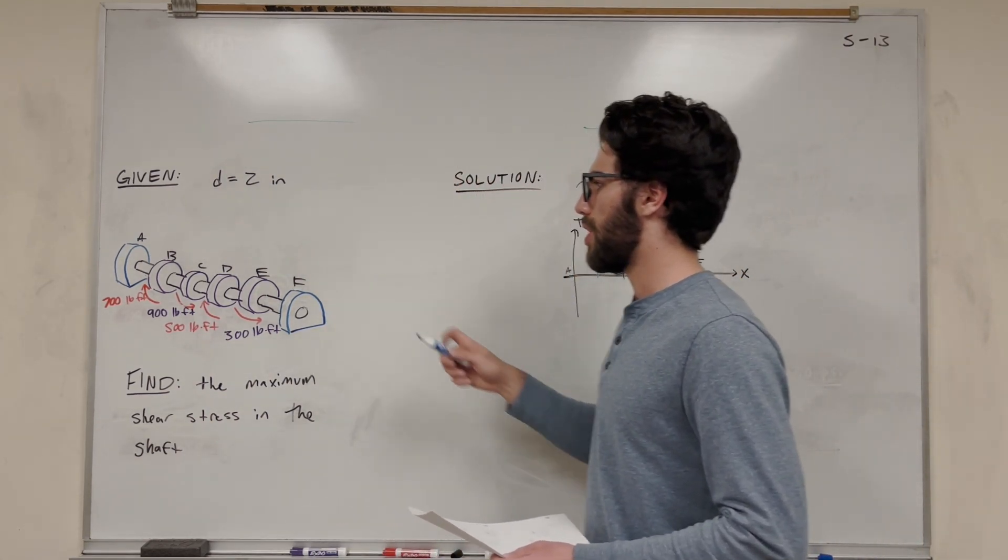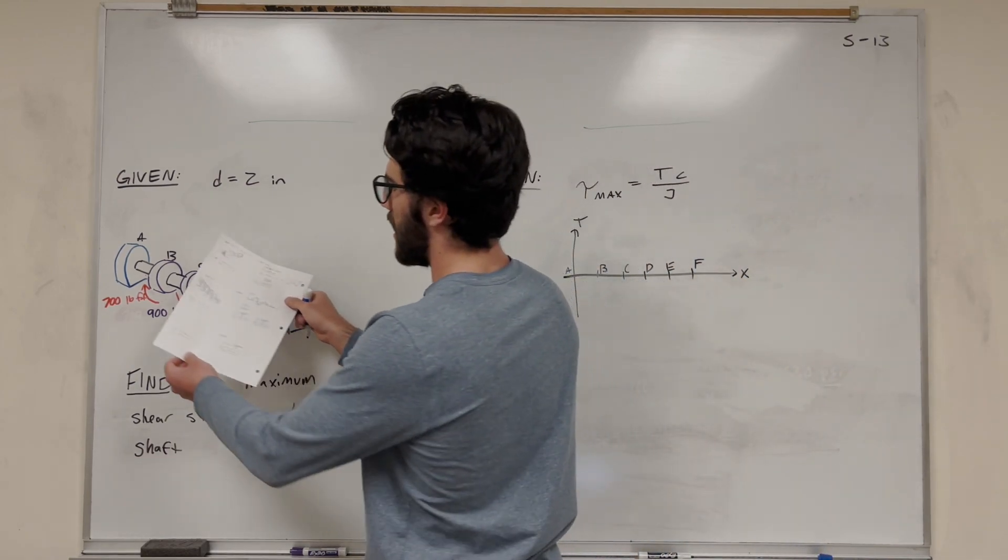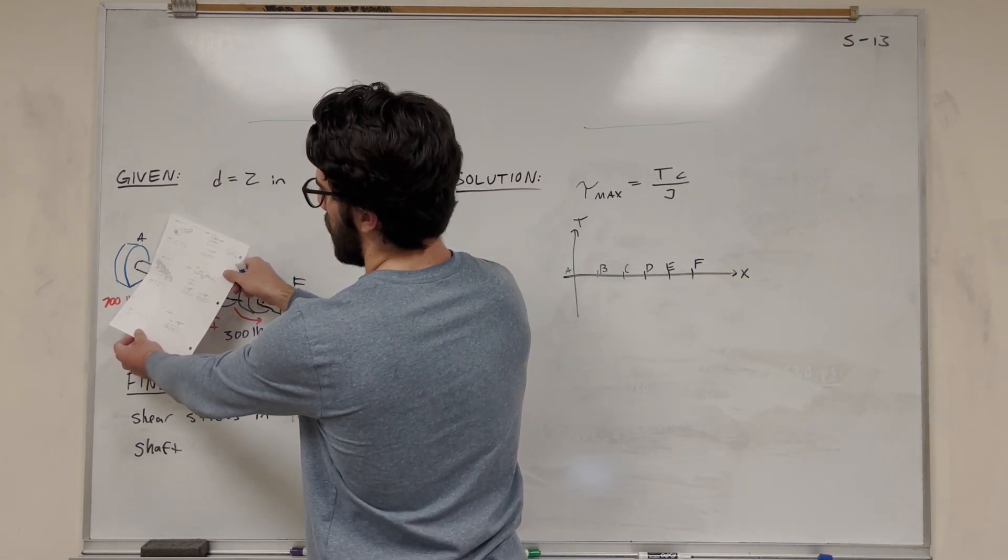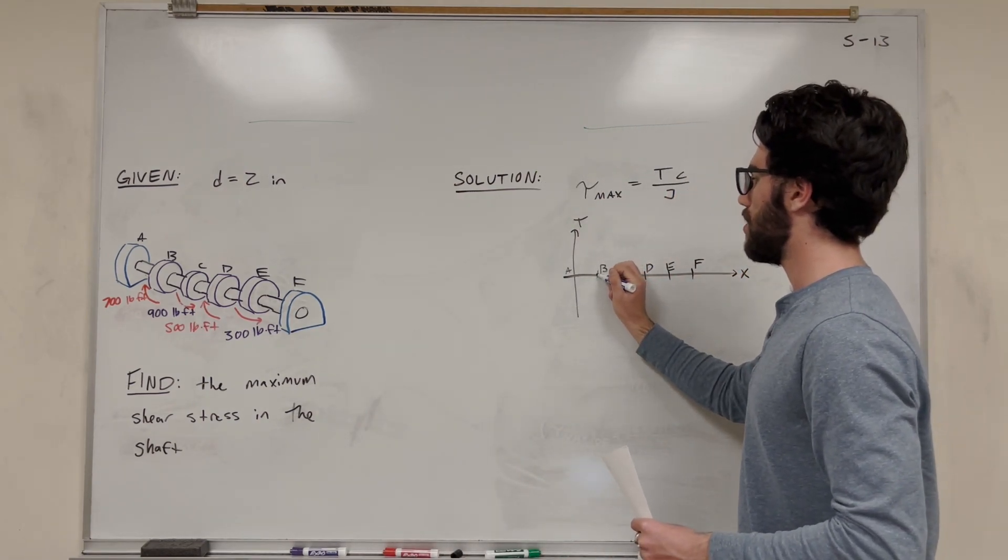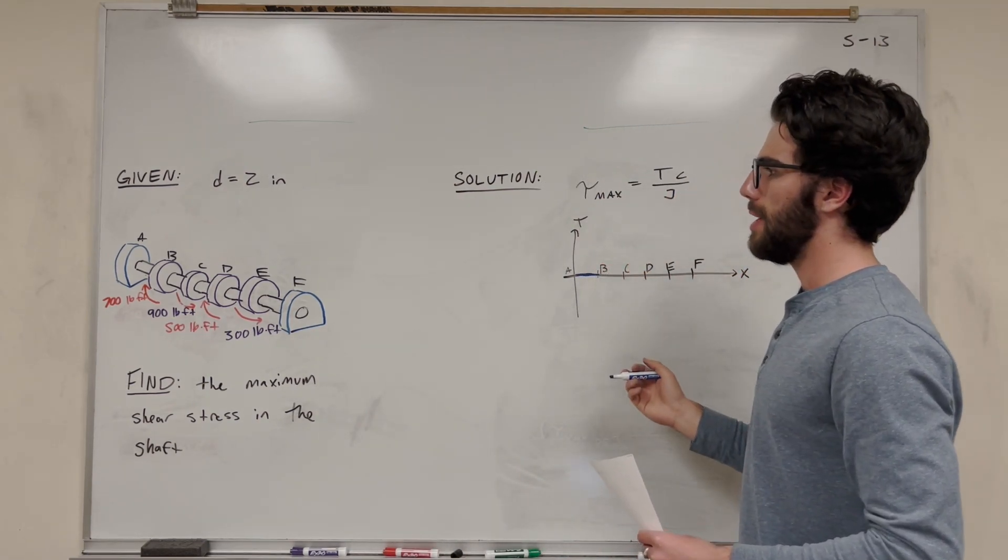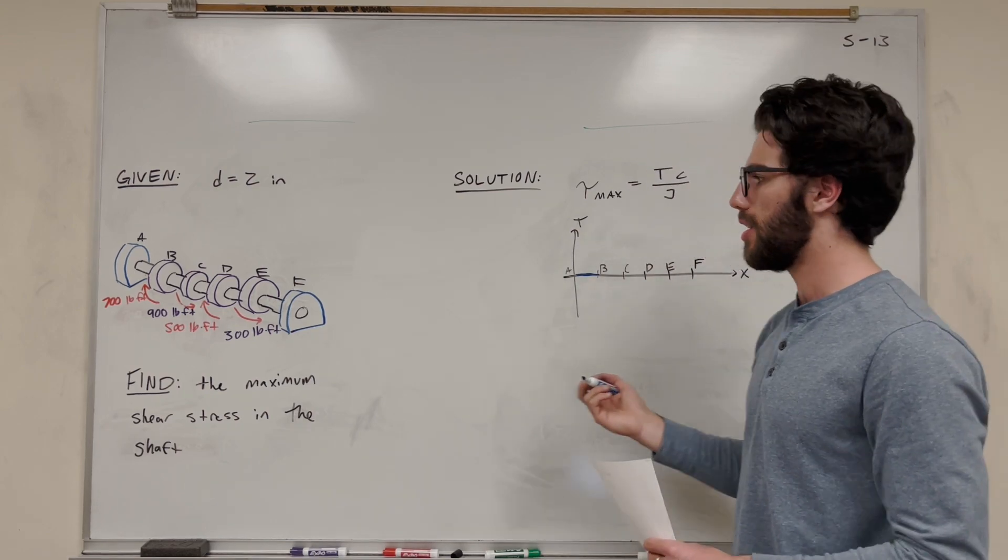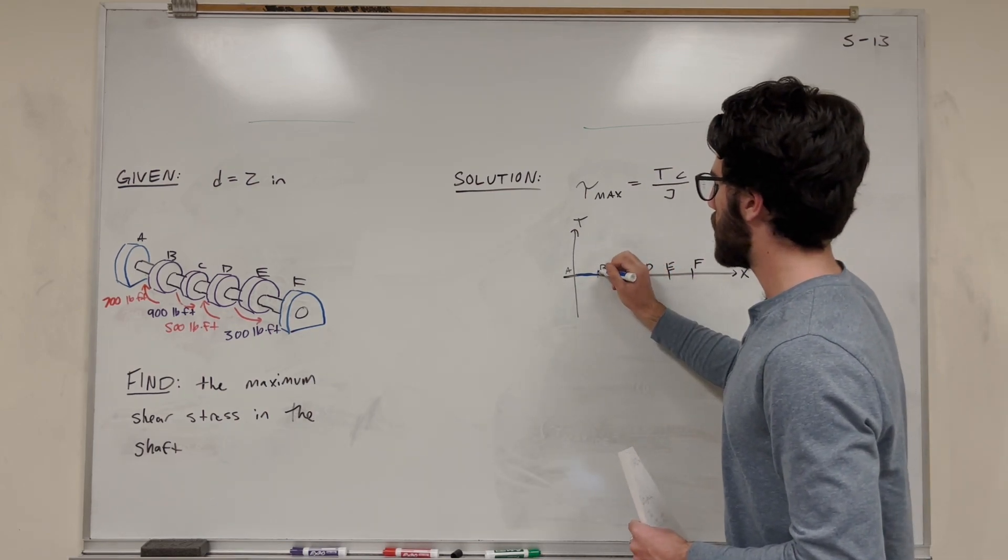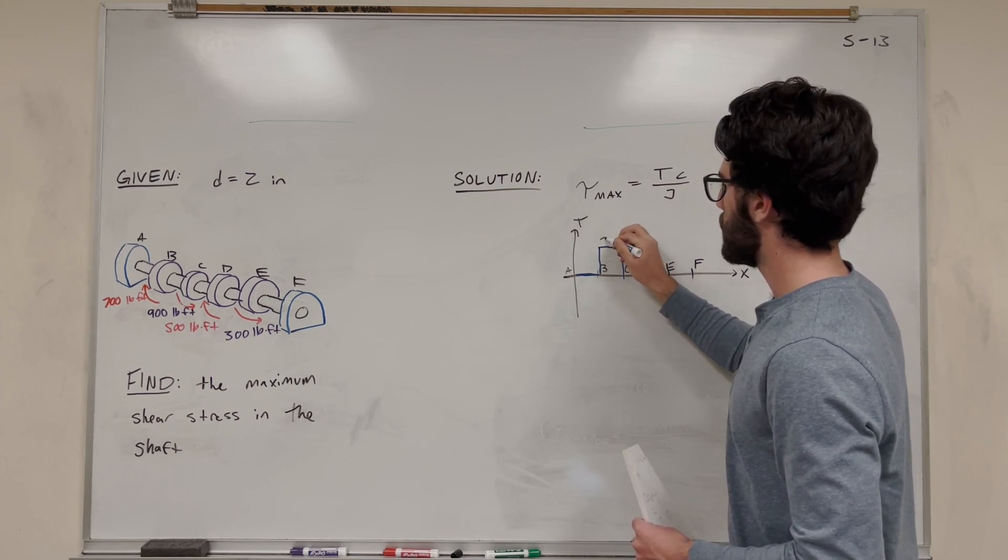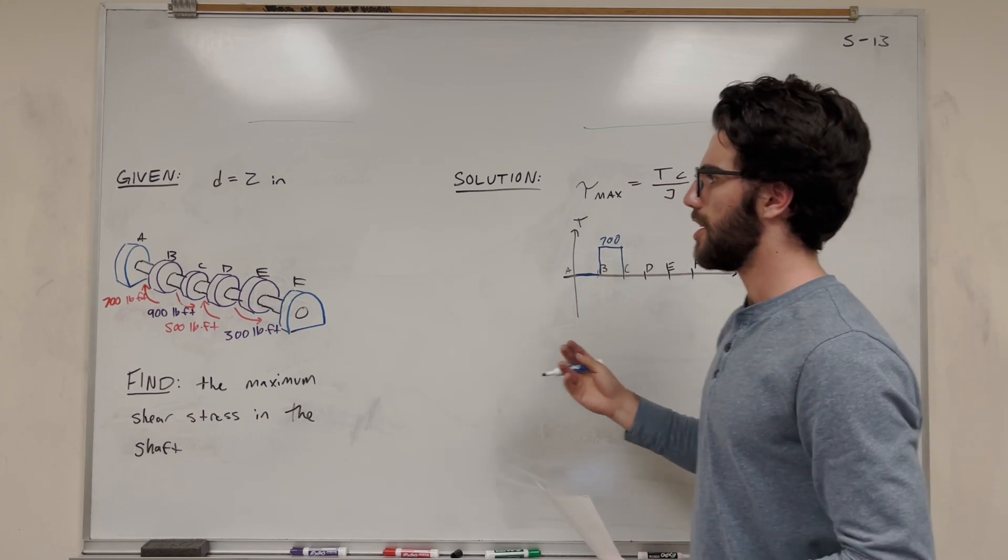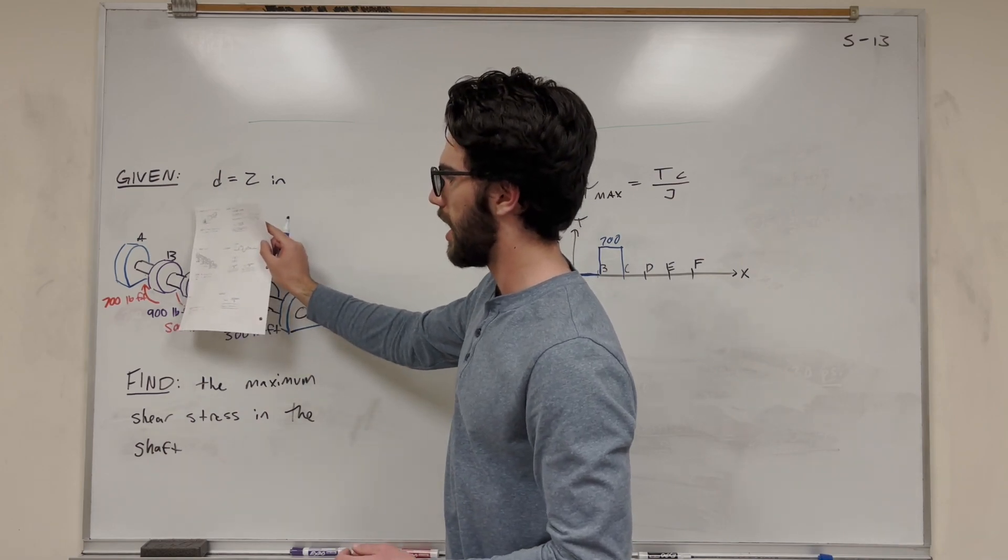From A to B, we have no torques acting. You can think about this as taking cuts. We're starting here and taking a cut in between A and B, and there's no torque happening, so we're at zero torque. Then we get to B and we reach this 700 pound-foot torque. We're going to make this positive, so let's say it was 700. If we took a cut between B and C, we'd see that the only torque acting is that 700.